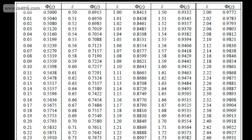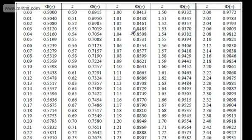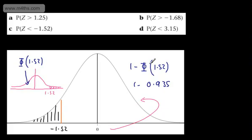So let's grab up a table. Where's 1.52? 1.52 is there, so 9357. So what we need to do, then, is 1 minus 0.9357. So what's that going to give us in total, then? 0.0643. So the probability now that Z is less than negative 1.52 is 0.0643.